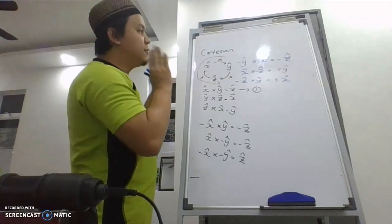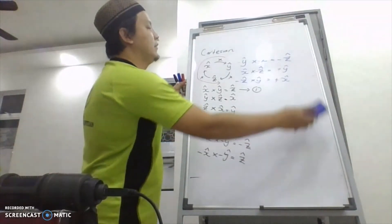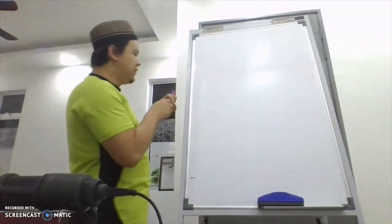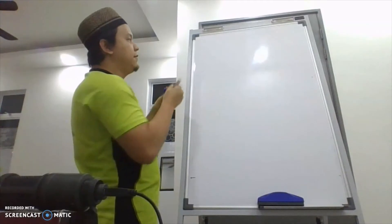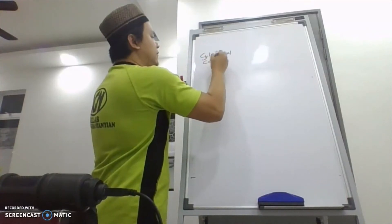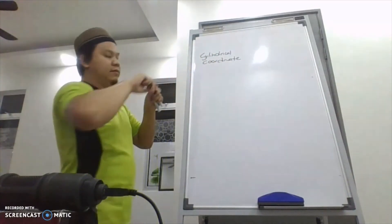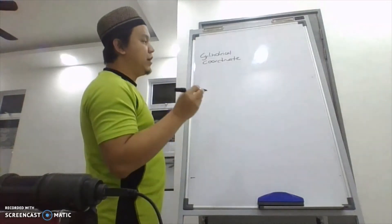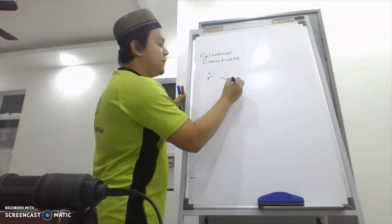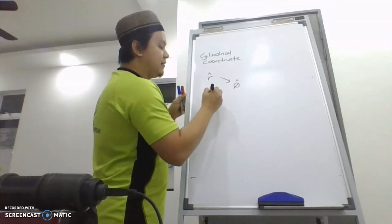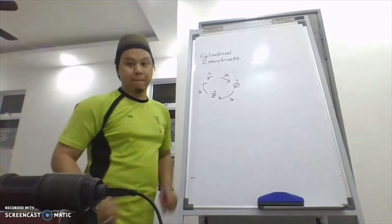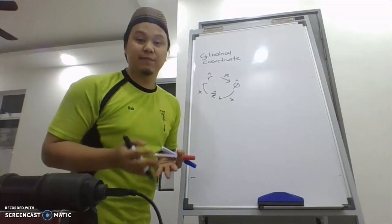Next, this is for Cartesian. For cylindrical coordinates, we have basically the same thing, but the components are R, φ, and Z. This is the sequence, and the rule is still the same as what I explained before.